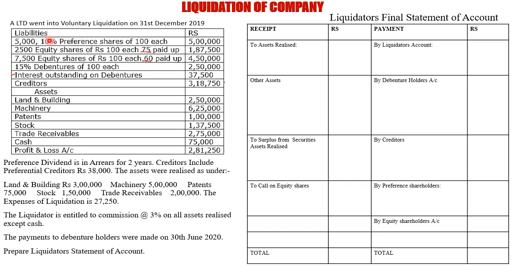The liabilities that the company has include preference shares of 100 each — 5 lakhs; 2000 equity shares of 100 each, 75 rupees paid up (so 25 rupees is still unpaid); and 7500 equity shares of 100 each, 60 rupees paid up (so 40 rupees is still unpaid).